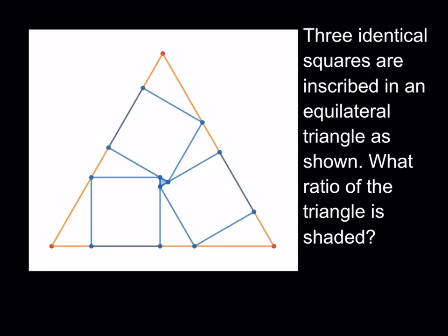Three identical squares are inscribed in an equilateral triangle as shown. What ratio of the triangle is shaded? So there's something funny about this. Which triangle are we talking about? If I'm talking about the little mini shaded blue triangle in the middle, then 100% of the triangle is obviously shaded. But of course, I'm not talking about that, I'm talking about the big one.